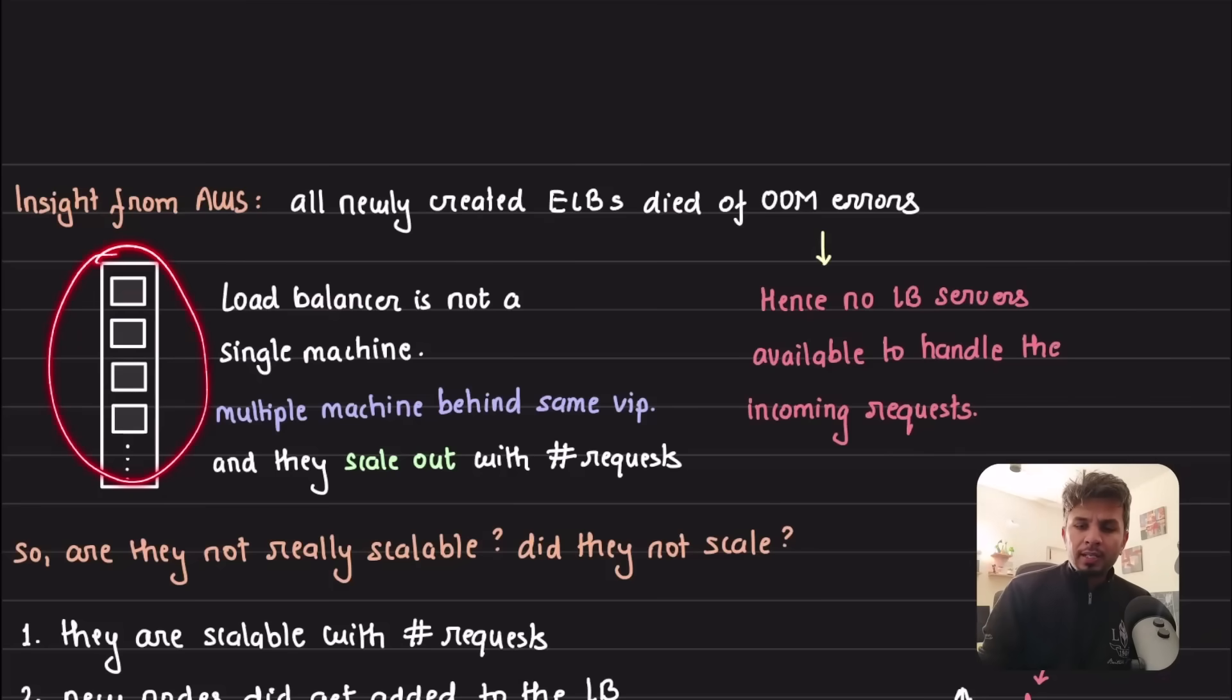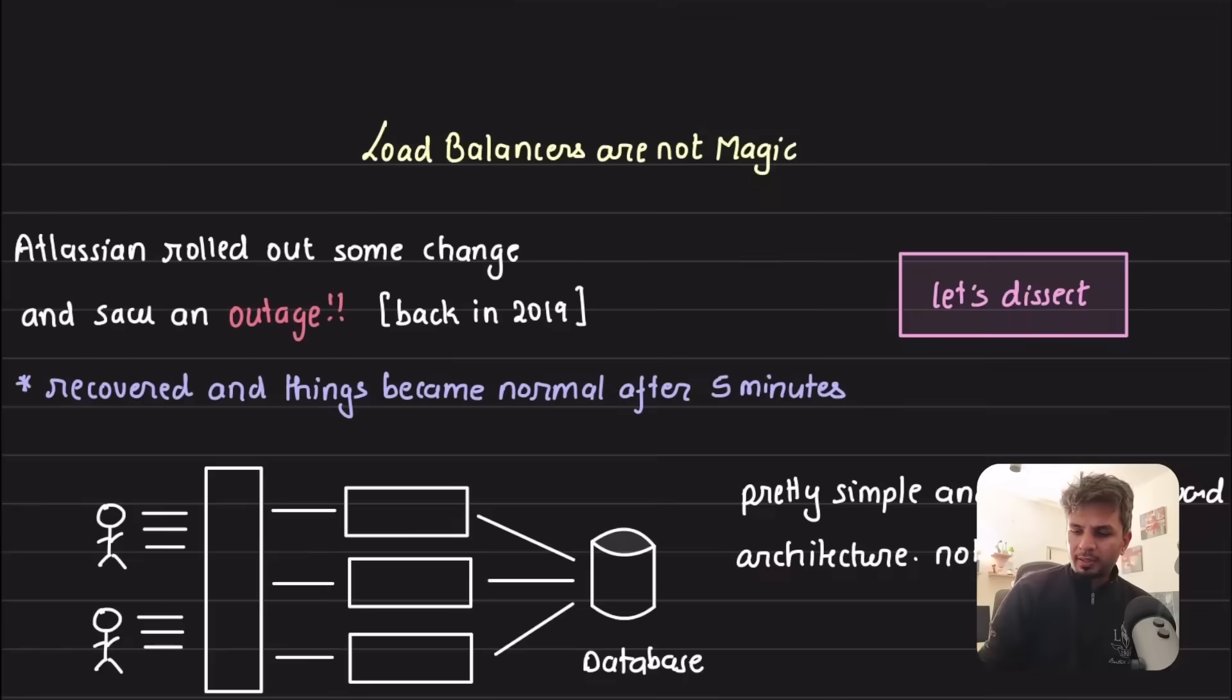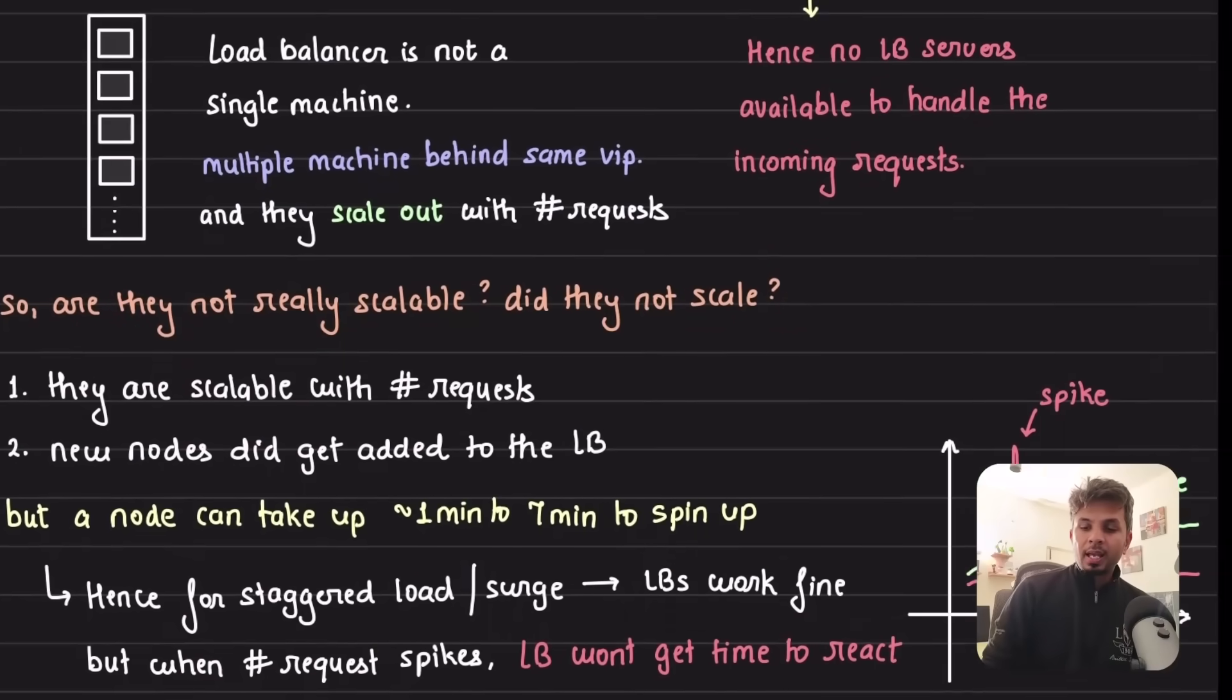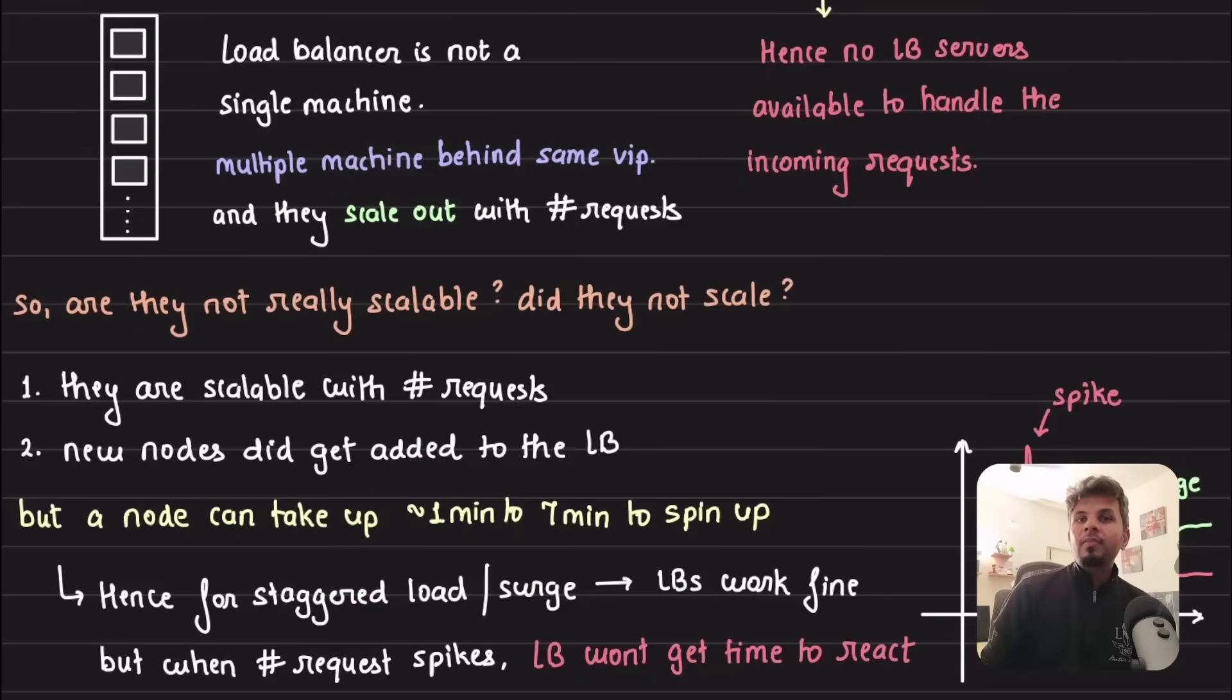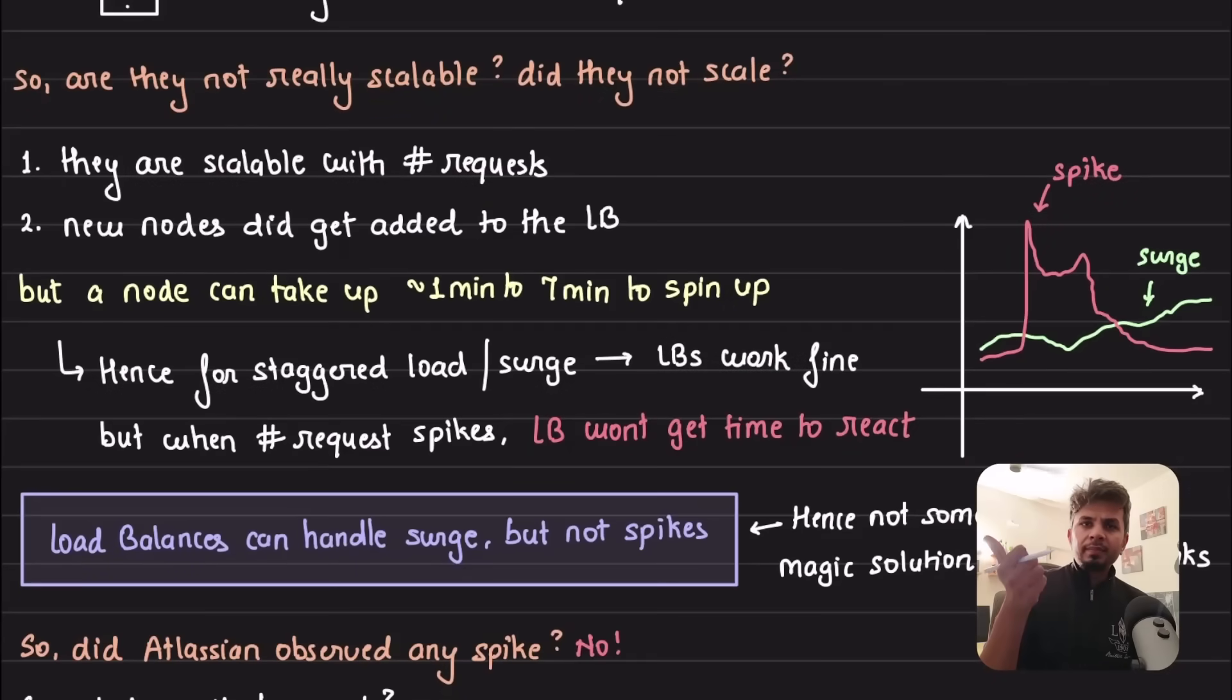Remember this load balancer is not a single machine, there are a bunch of load balancer servers abstracted behind a single domain name or IP address. Now the job of the load balancer is to horizontally scale the servers that are powering it. So when the load increases, the LB servers also increase to handle the incoming requests. If load balancers are scalable, why was it not able to handle the load and the requests dipped to zero?